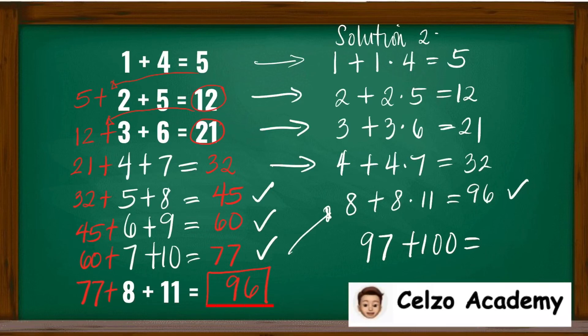So if you're asked to find the value of 97 plus 100, this means that you need to do 97 plus 97 times 100. And 97 times 100 is 9,700 plus 97 is 9,797.